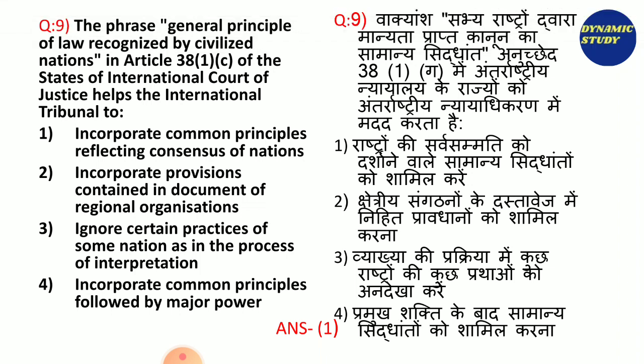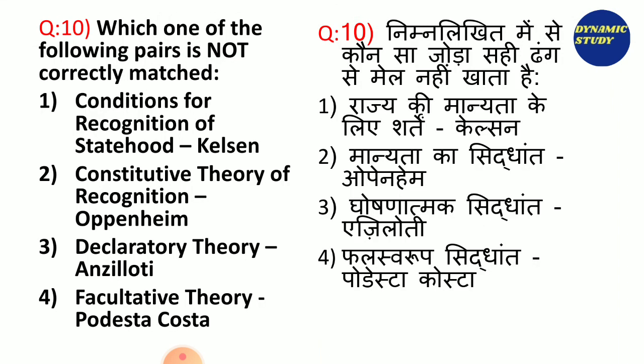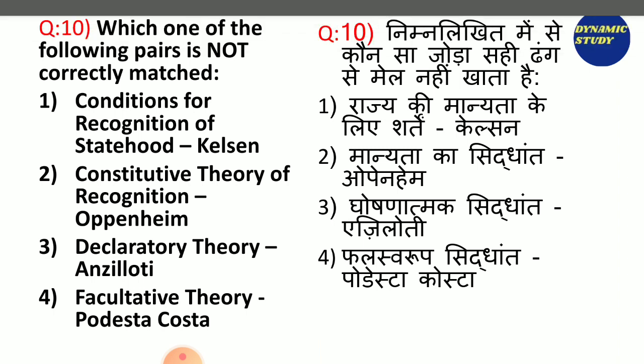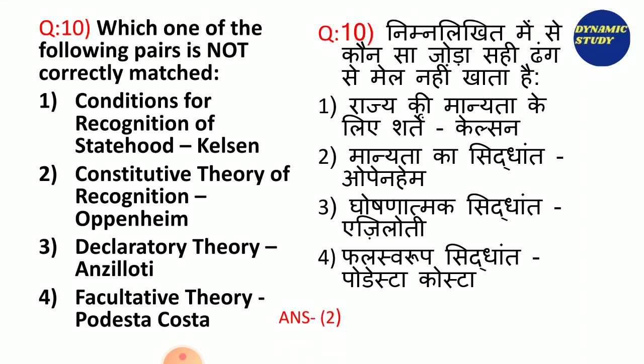And the last question: Which one of the following pairs is not correctly matched? Options: conditions for recognition of state by Kelson; constitutive theory of recognition by Oppenheim; declarative theory by Anzilotti; facultative theory by Podesta Costa. And the answer is second — constitutive theory of recognition by Oppenheim.